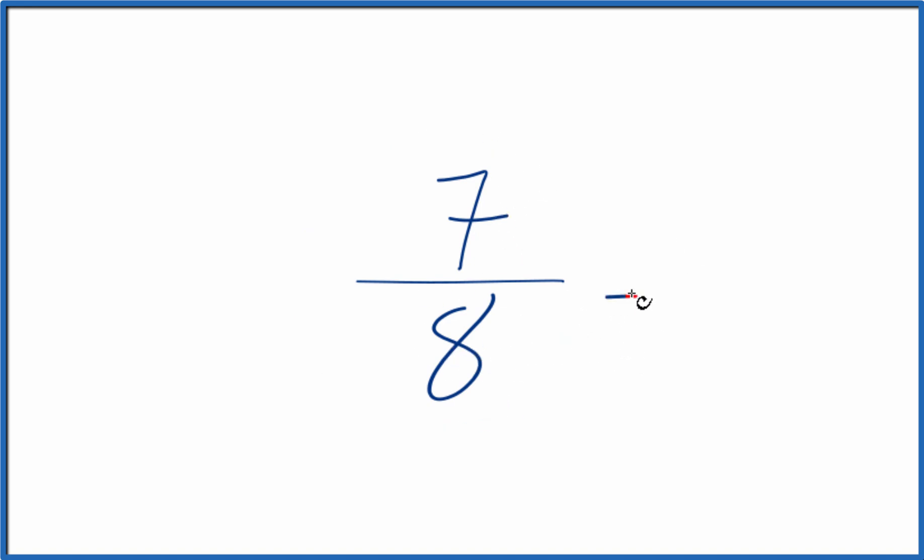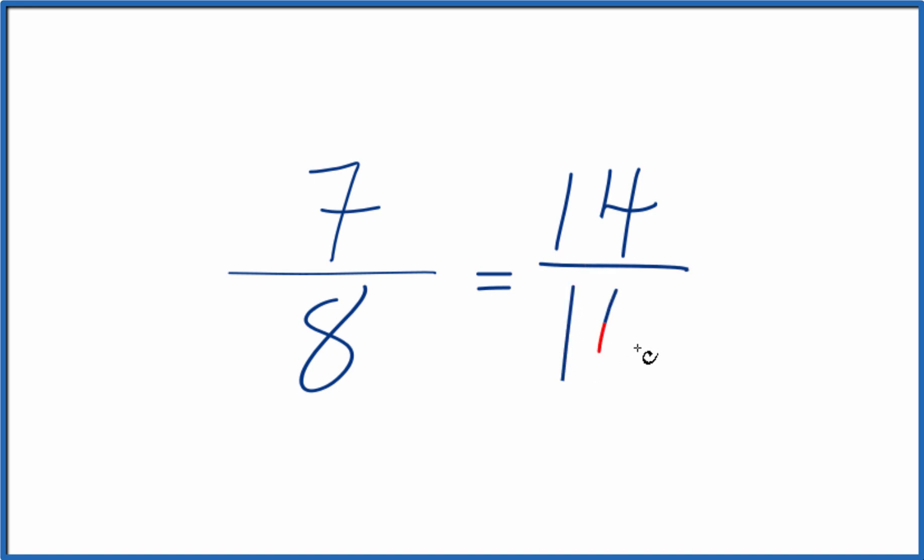So let's start out, let's multiply 7 times 2 and 8 times 2. 7 times 2 is 14. 8 times 2 is 16. So 14 sixteenths, that's an equivalent ratio to 7 eighths, equivalent fraction.